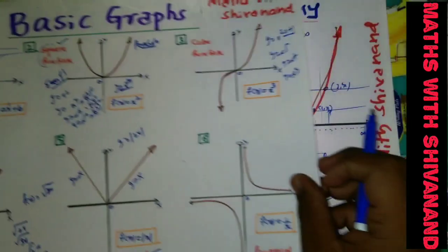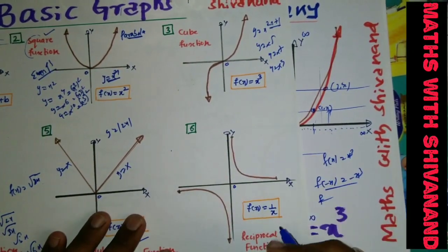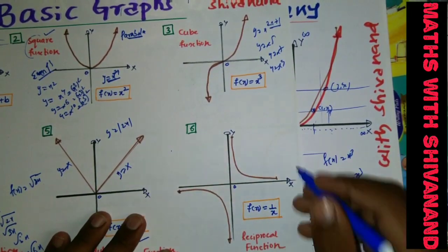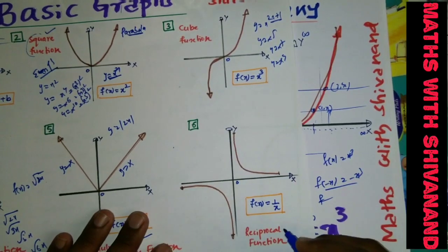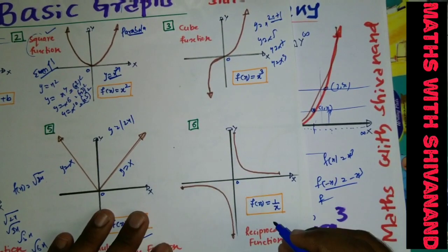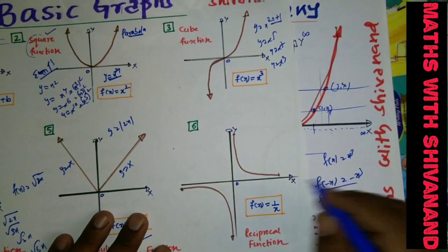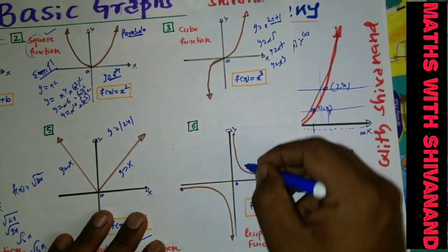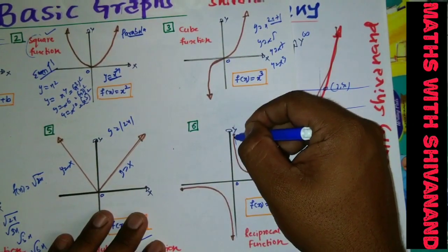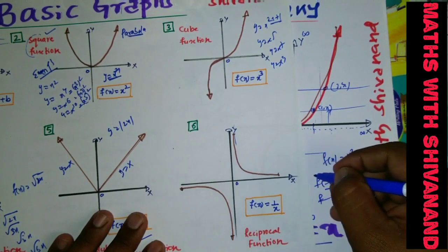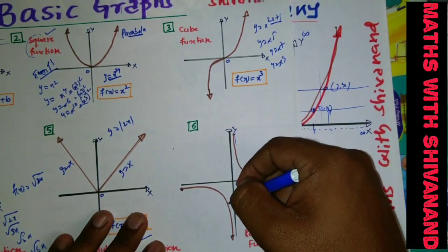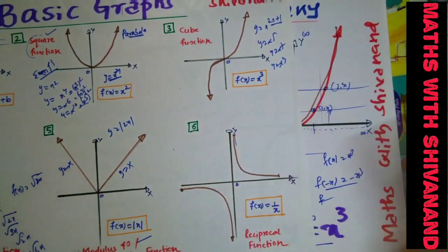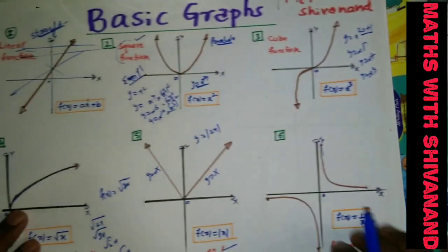Graph number six is the reciprocal function — f(x) = 1/x. All reciprocal functions, whether 1/x, 1/(2x), 1/(3x), or 1/(5x), are always of the same shape. You will have two loops. This curve will never touch the y-axis, and it will never touch the x-axis. These lines are called asymptotes — the curve will meet them only at infinity, which is practically impossible.